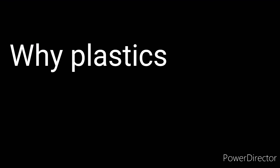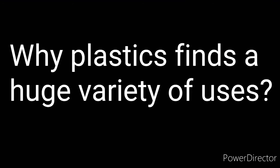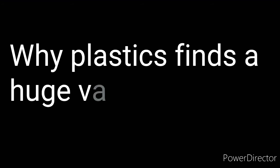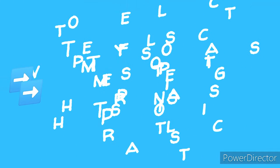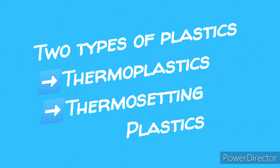Plastic finds a huge variety of uses because it is highly durable and cheaper. Plastics cannot get damaged easily. They are lightweight, do not rust or rot, easy to transport, reusable, easily moldable, can be colored, rolled into sheets or made into wires, etc. A material is said to be plastic if it can be molded or formed into different shapes.